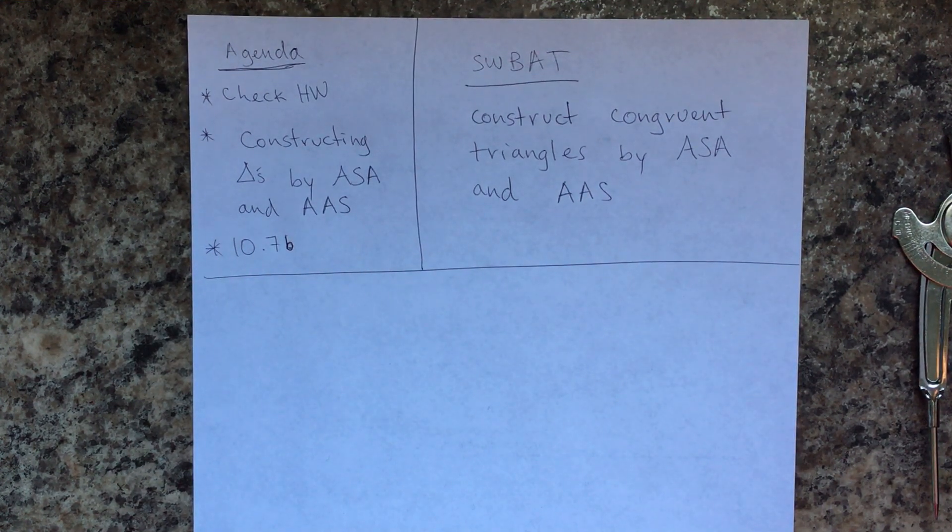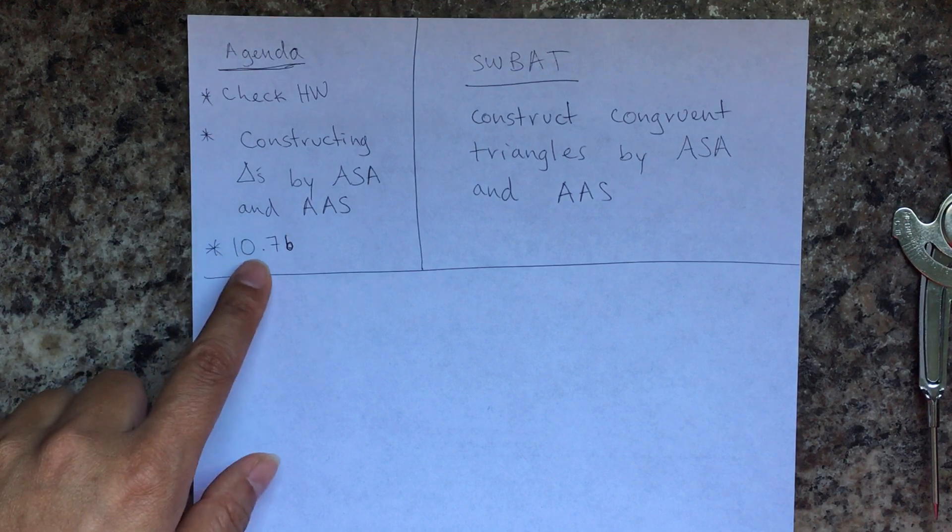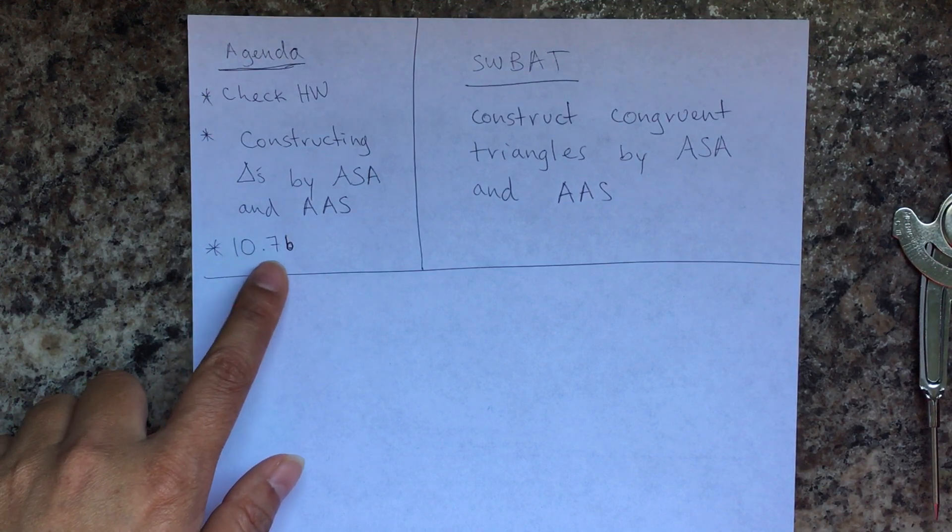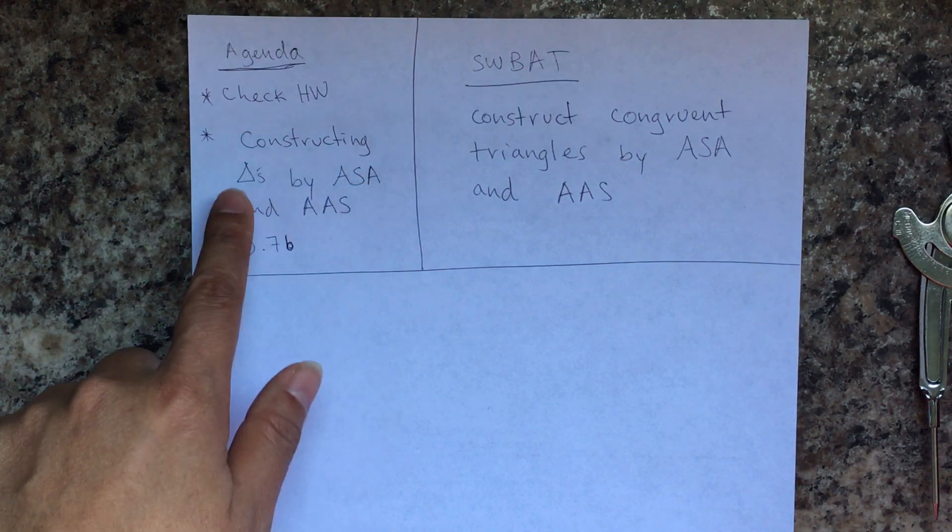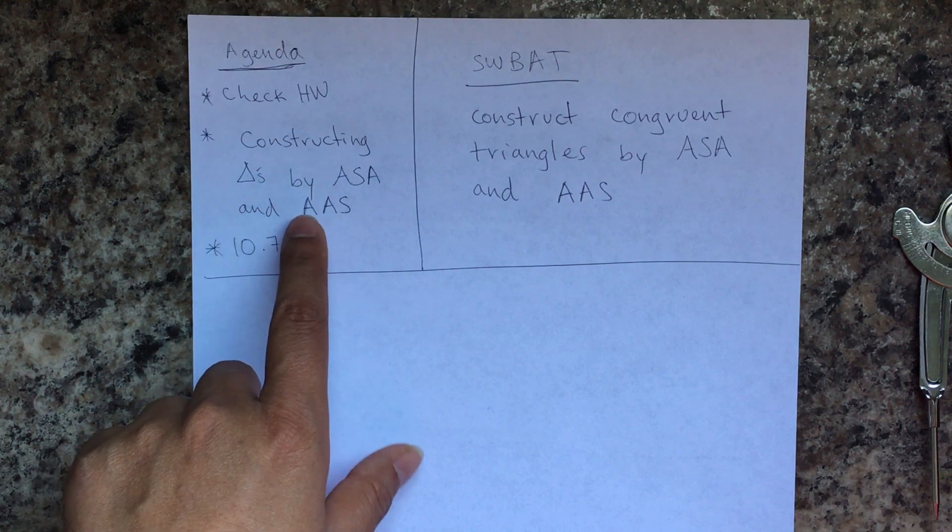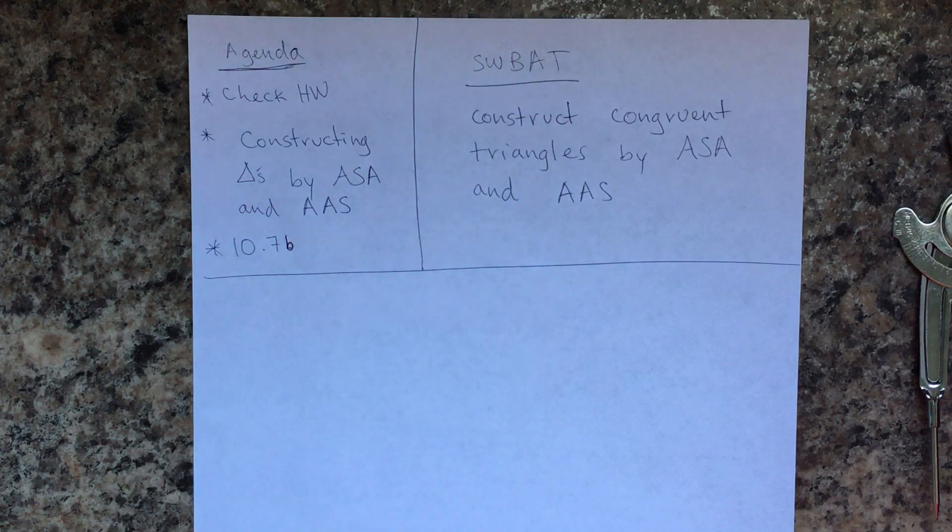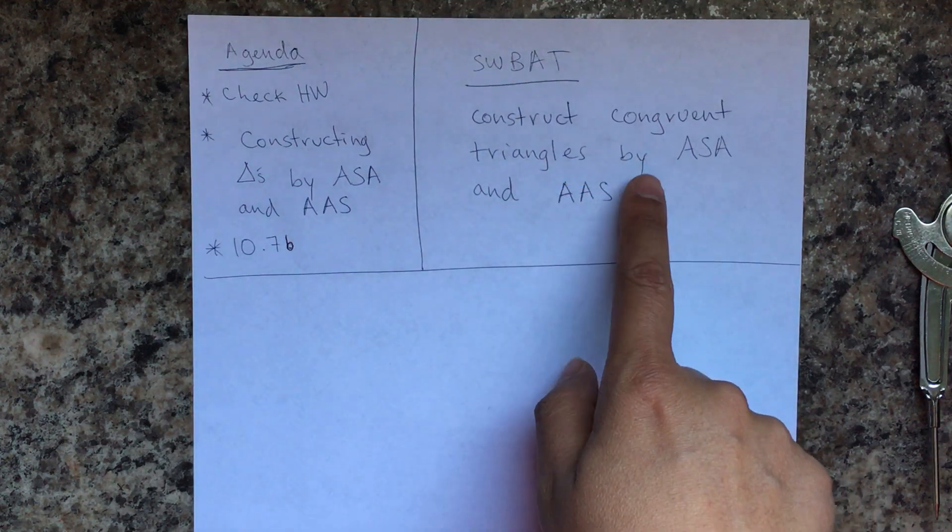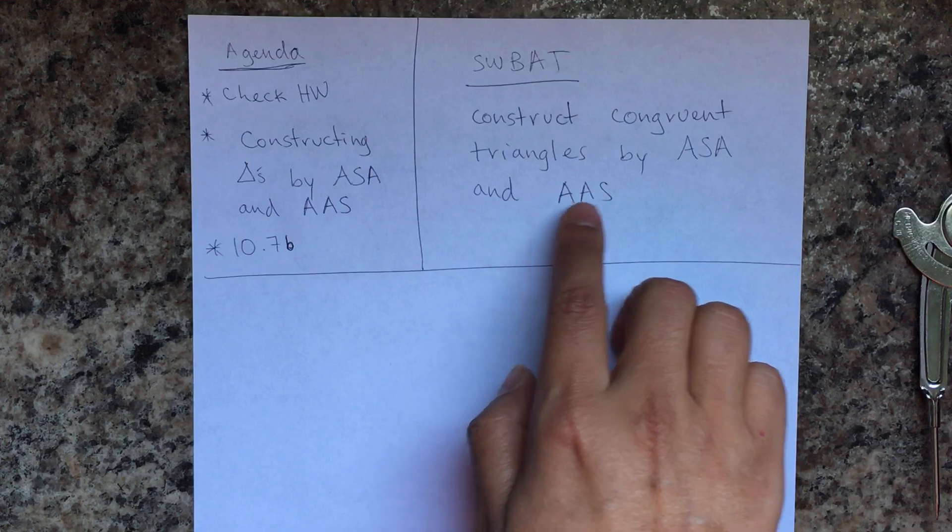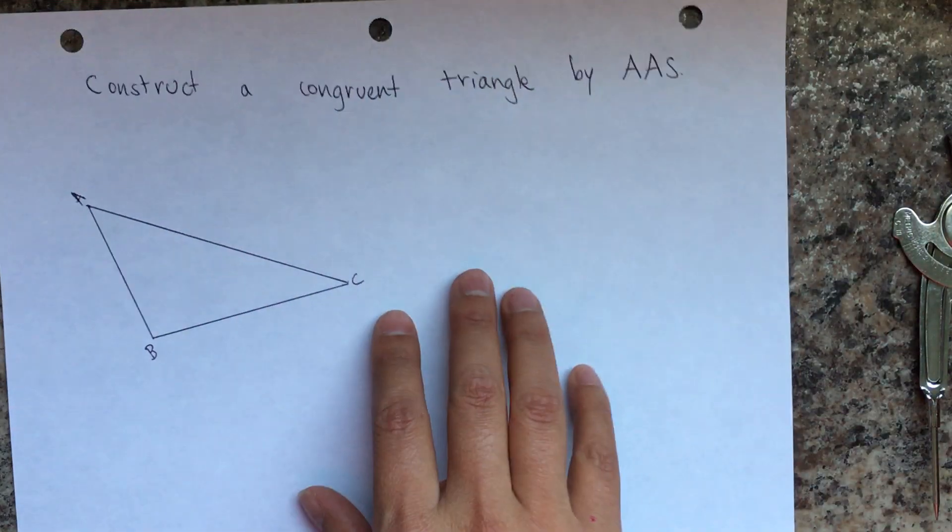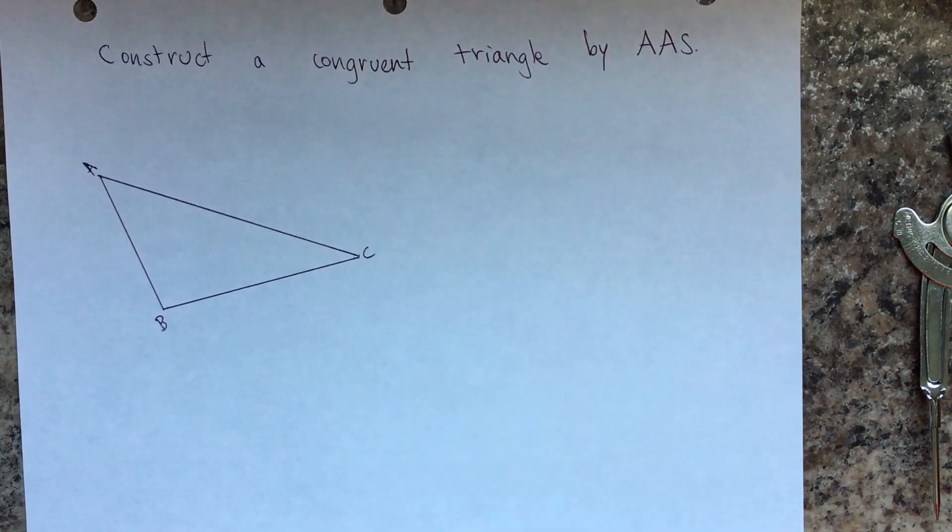Hello students, so today's agenda is the same as yesterday but we're just doing the second part of 10.7. It's constructing triangles, and today we're going to cover angle angle side. I decided to use this one as a separate lesson just because it's a little bit more complex, it takes more steps, and so I just wanted it to be isolated.